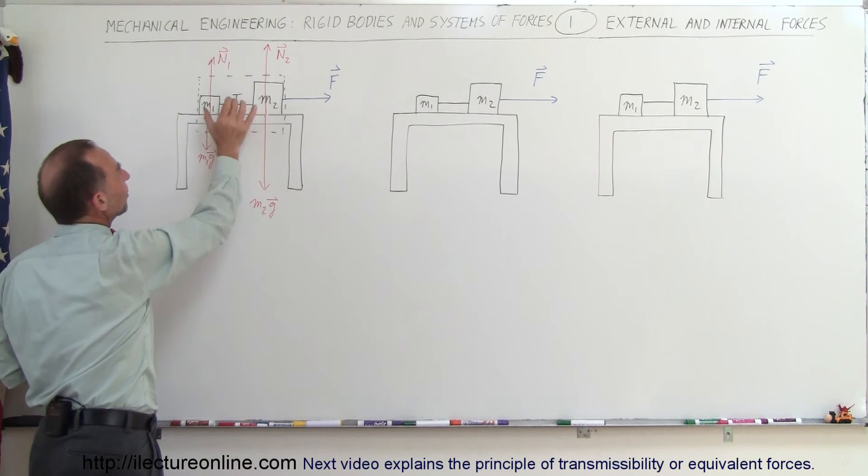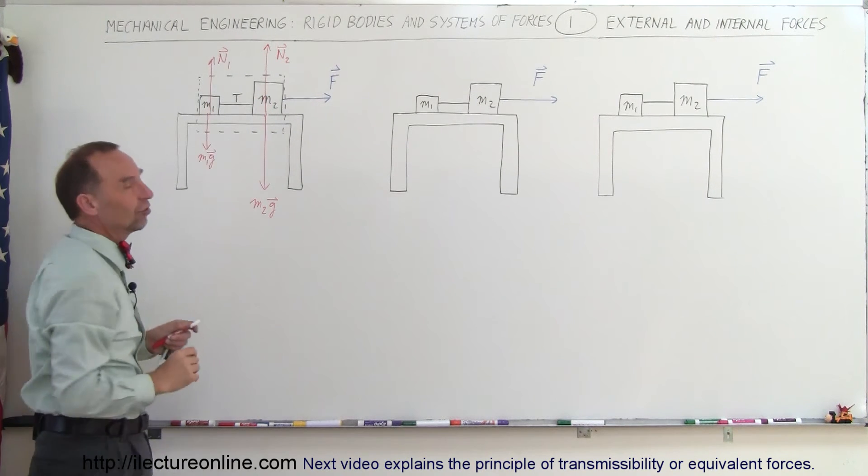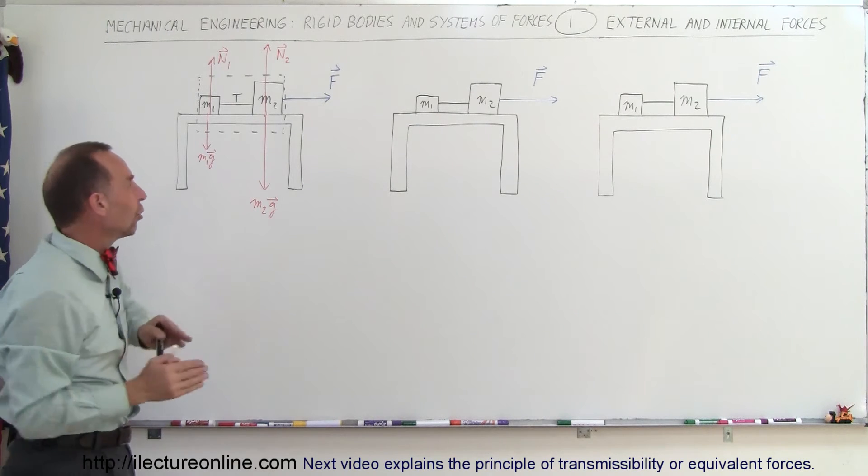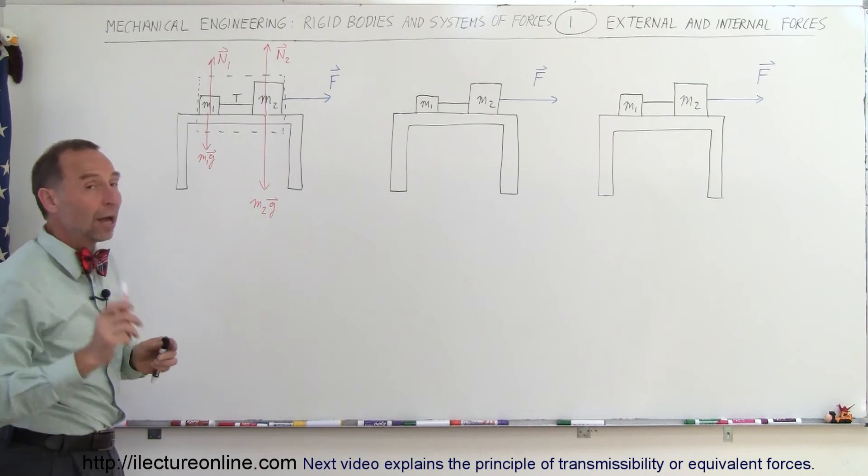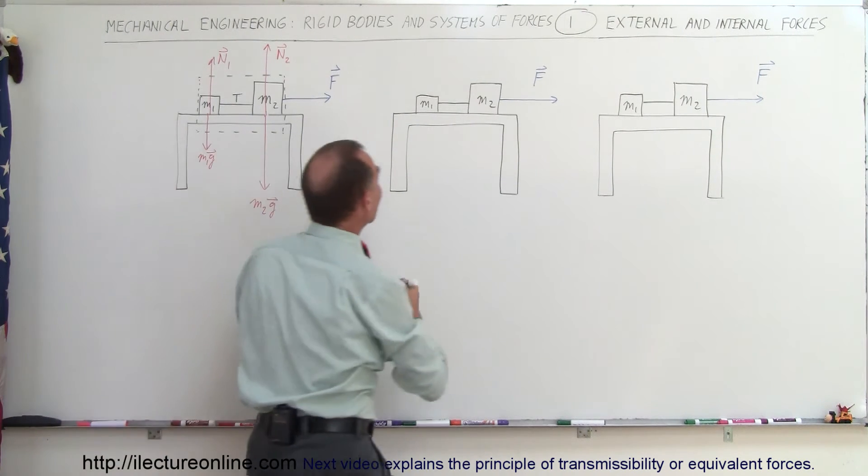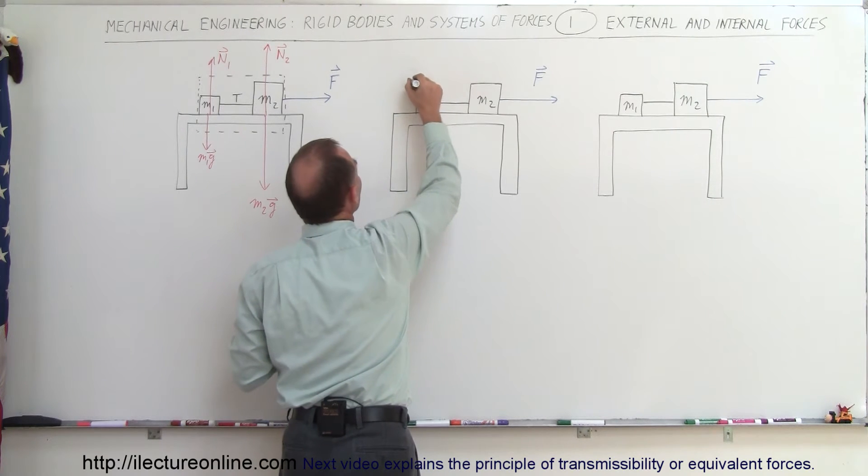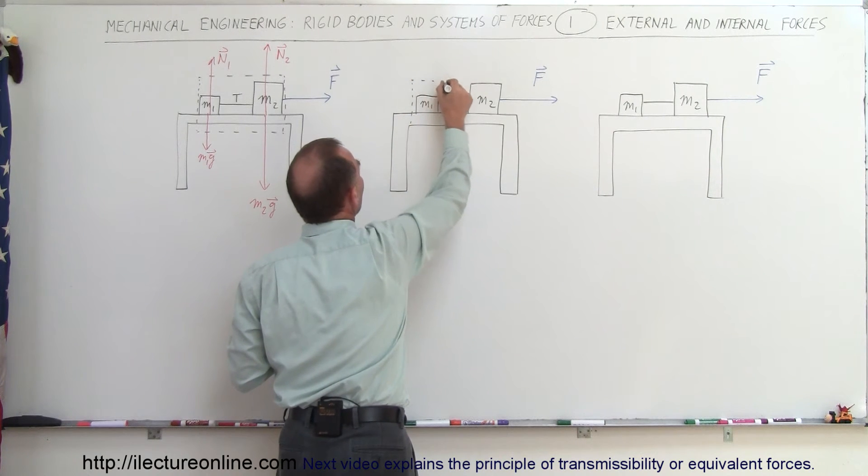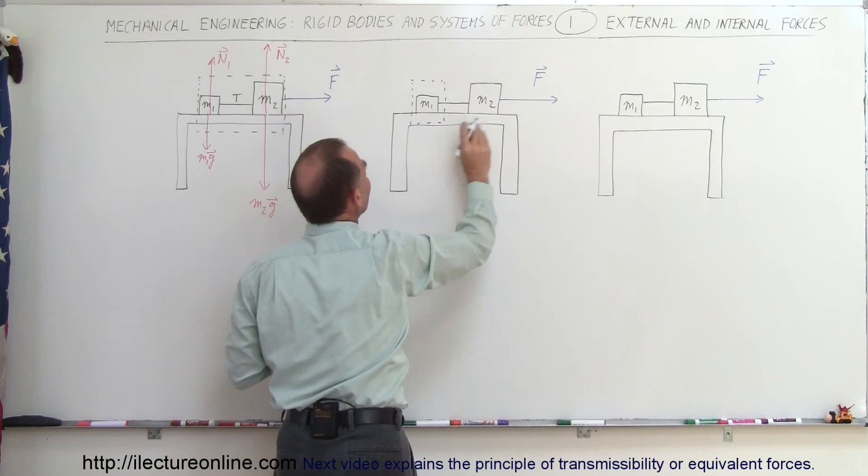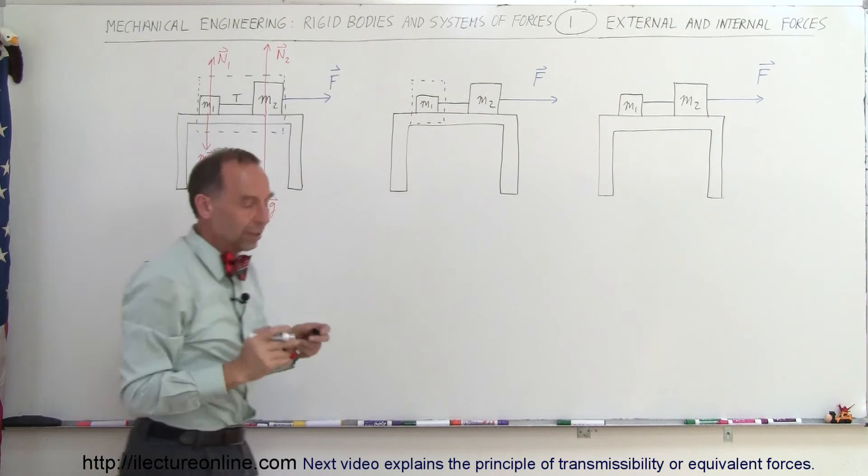The tension here is not external to the system, it's internal to the system. So when we look at the system as a whole we can ignore the tension. Now however, if we now draw a free body diagram around this object right here, only M1, now you can see that F no longer plays a part on M1.